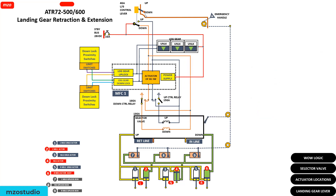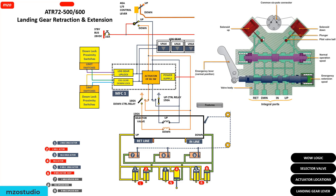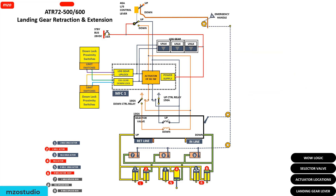You can see here the up control relay is energized, which energizes Epsilon 9. Epsilon 9 is energized, and the pressure goes to the landing gear actuator and the unlock actuator.